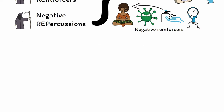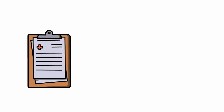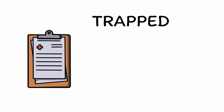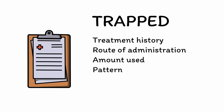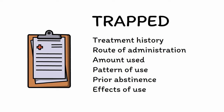Let's introduce a few tools for clinical practice to help diagnose addiction. First, you can gather a complete substance history using the mnemonic TRAPPED, which stands for: Treatment history, Route of administration, Amount used, Pattern of use, Prior abstinence, Effects of use (both positive and negative), and Duration of use.